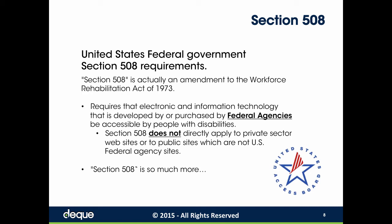The 1998 version created binding and enforceable standards incorporated into the federal procurement process. The amended Section 508 also established a complaint procedure and reporting requirements, which further strengthened the law. Contrary to what you may read on the web, Section 508 does not directly apply to private sector websites or to public sites that are not U.S. federal agency sites or that receive federal money or grants.